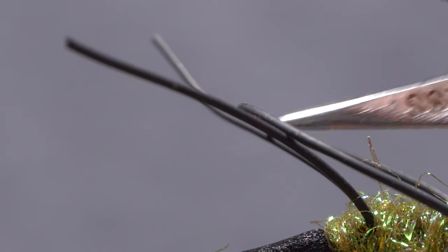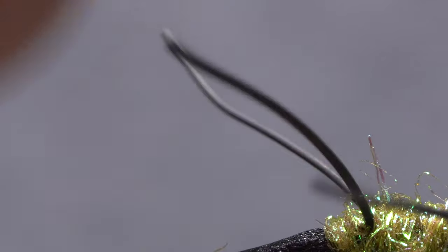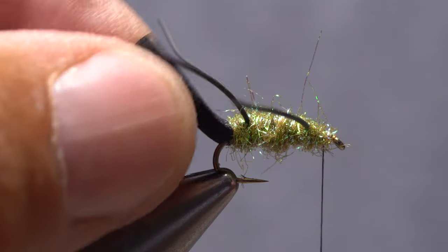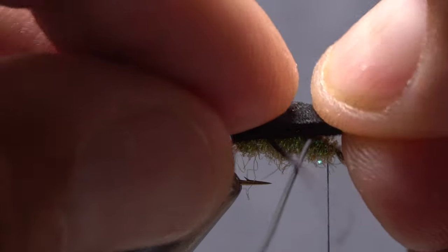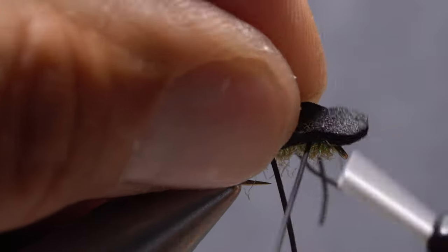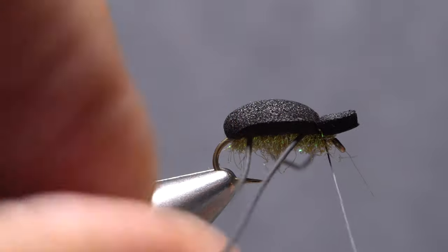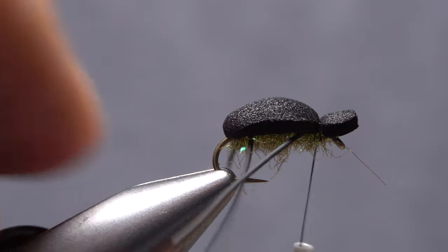Snip the rubber loop to produce four legs on the fly, two on each side. Pull the foam forward over top of the dubbed body and anchor it to the hook shank leaving a short little gurgler-like head. Bind the foam down really well with tight wraps of tying thread.